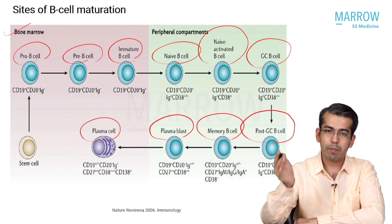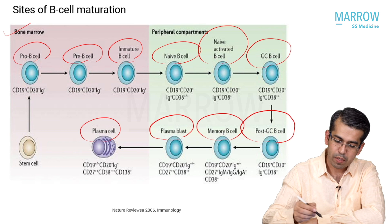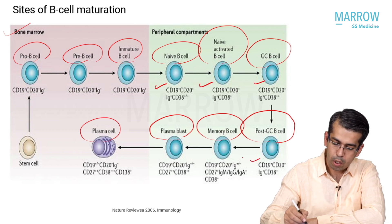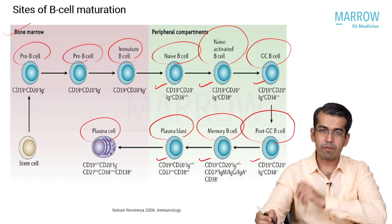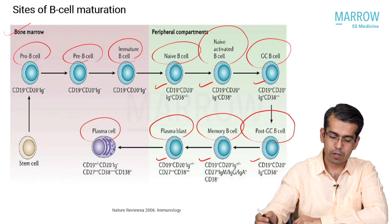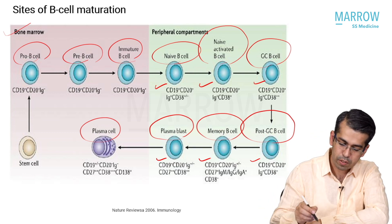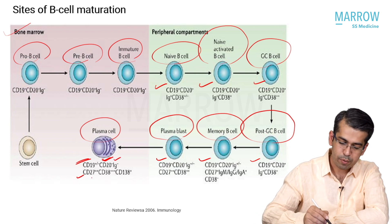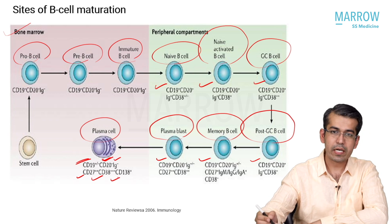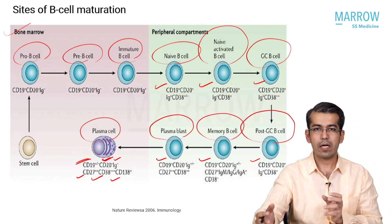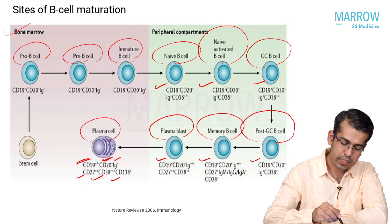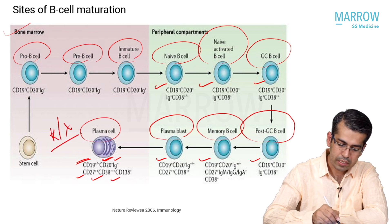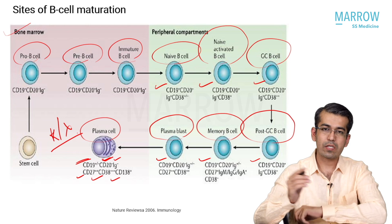Looking at B cell maturity markers, all of them are CD19 and CD20 positive along with surface immunoglobulin positivity, which is a marker of a mature B cell. But when it comes to the plasma cell, CD19 may be positive or negative, CD20 is lost, and the plasma cell markers CD27, CD38, and CD138 are expressed. Plasma cells are typically positive for both light chains - kappa as well as lambda.